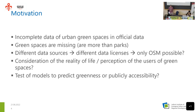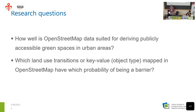We also want to test modules to predict greenness and public accessibility. The main research question is: how well is OpenStreetMap data suited for deriving publicly accessible green spaces in urban areas? A secondary question is: which land use transitions — from Land Use A to Land Use B — mapped in OpenStreetMap have which probability of being a barrier in the context of this study?